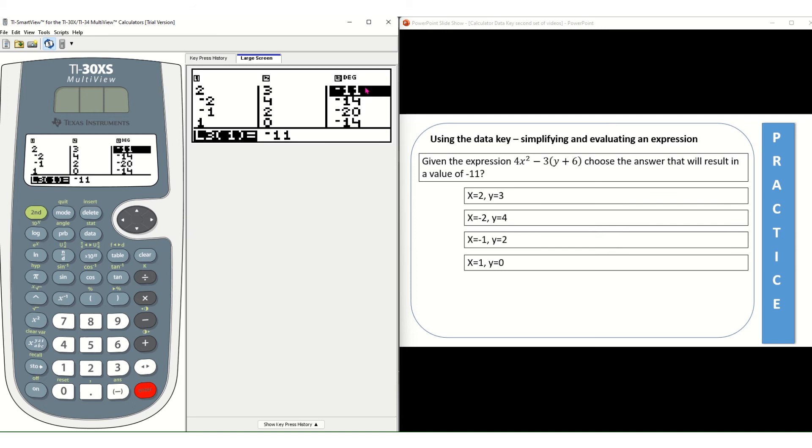And then all of the different values from the L1, L2 list, your x and your y are right here in L3. So the example asks which one of the answer choices will result in a value of negative 11. And we can see right up here that first choice that we put in where x equals 2, y equals 3 gave us the value of negative 11.